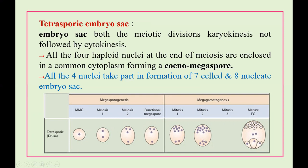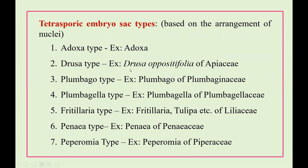In the second mitosis it develops into 16 nuclei, though this may differ. Based on the differences in mitotic patterns and the arrangement of nuclei, tetrasporic embryo sac development is of several types: adoxa-type, drusa-type, plumbago-type, plumbagella-type, fritillaria-type, penia-type, and peperomia-type. All these differences are based on the arrangement of the nuclei.